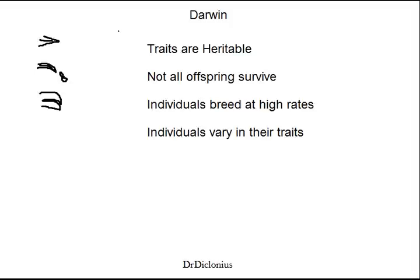One of those things was that all the traits are heritable, meaning that traits are passed down from parent to offspring. Another important observation is that not all the offspring survive — a habitat may not have enough resources to support all the offspring. Going hand-in-hand with that is that individuals breed at high rates, and the environment just can't support that many offspring.